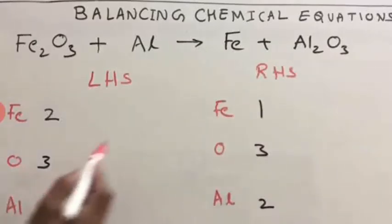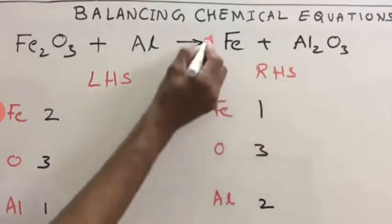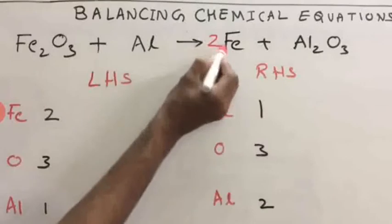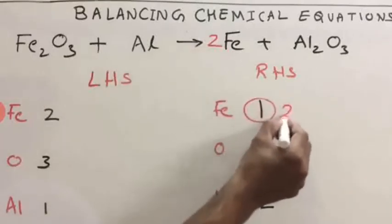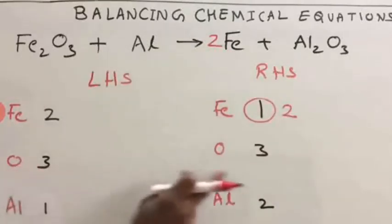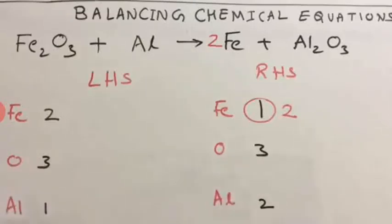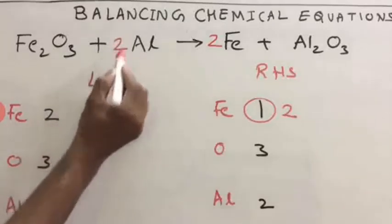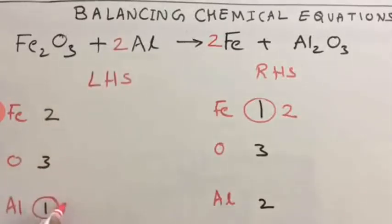Let us balance it. Here only one iron is there on RHS, so multiply with 2 — iron will become 2. Now oxygen is already balanced: 3 and 3. Aluminium on LHS you have 1, on RHS you have 2. That means on LHS you have to multiply with 2. If you multiply with 2, it will become 2 aluminium. Thus this is your balanced equation.